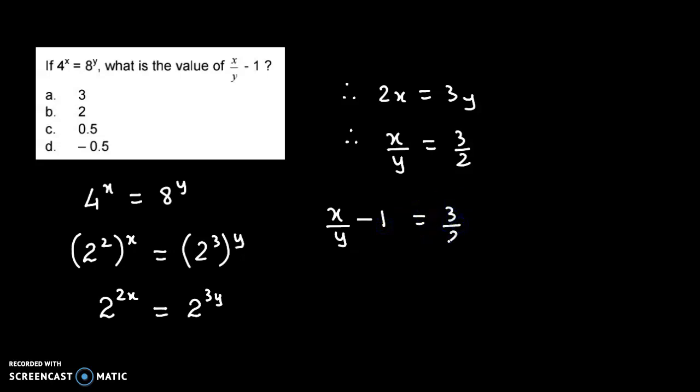Which is equal to, if we simplify this, 2 ones are 2, so 3 minus 2, that's 1 upon 2. And if we write this in decimals, so this is 0.5. Therefore, x upon y minus 1, the value of x upon y minus 1 is 0.5, which is option C.